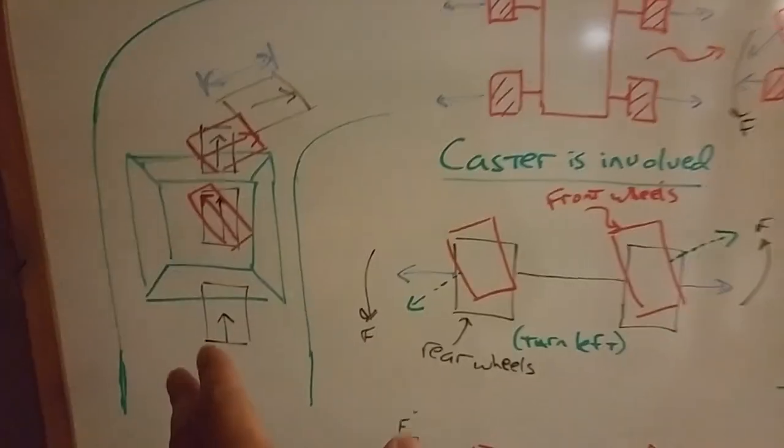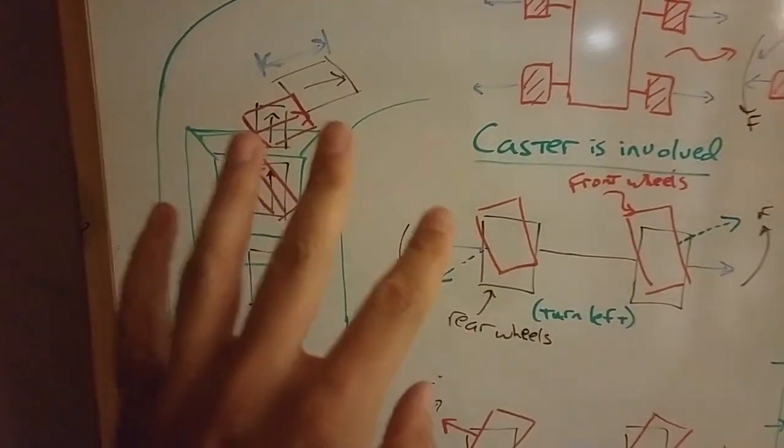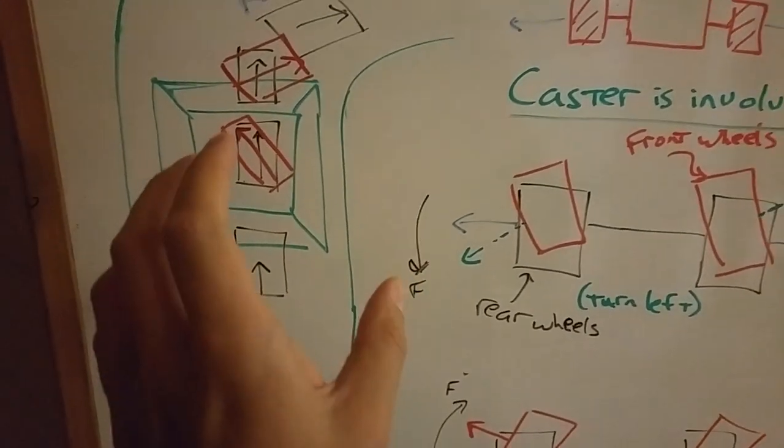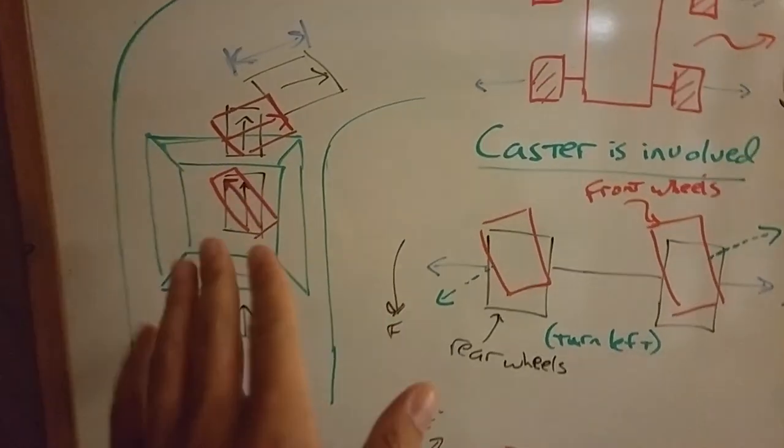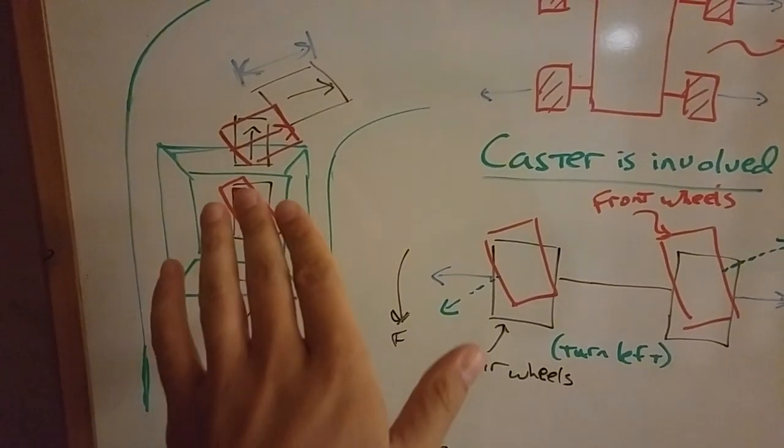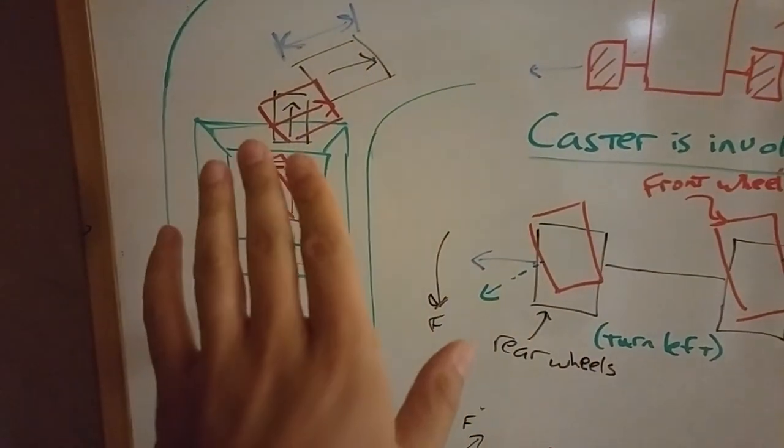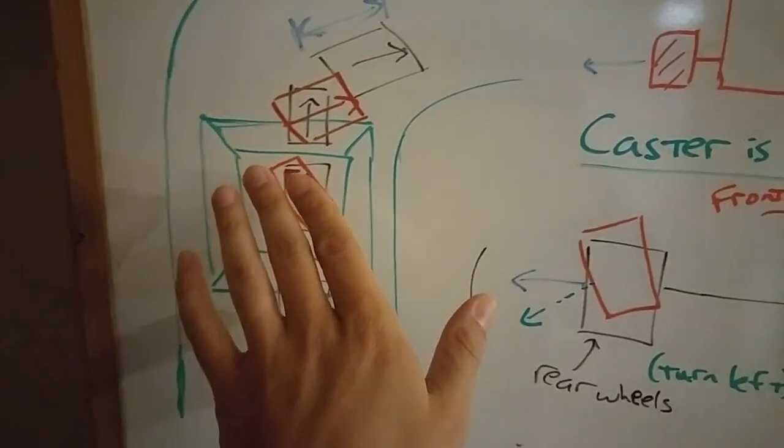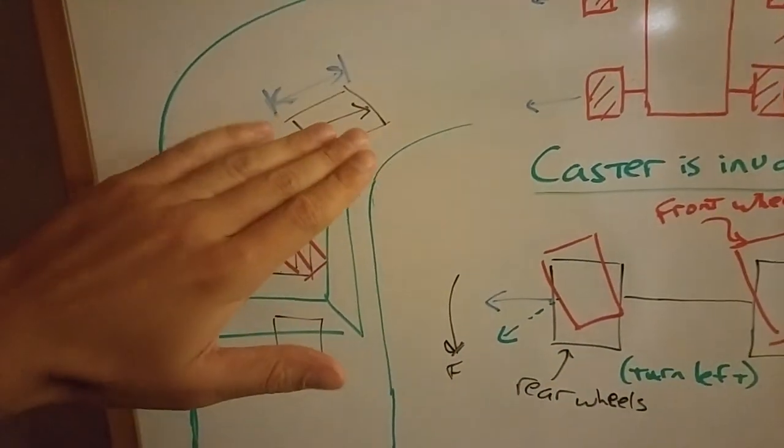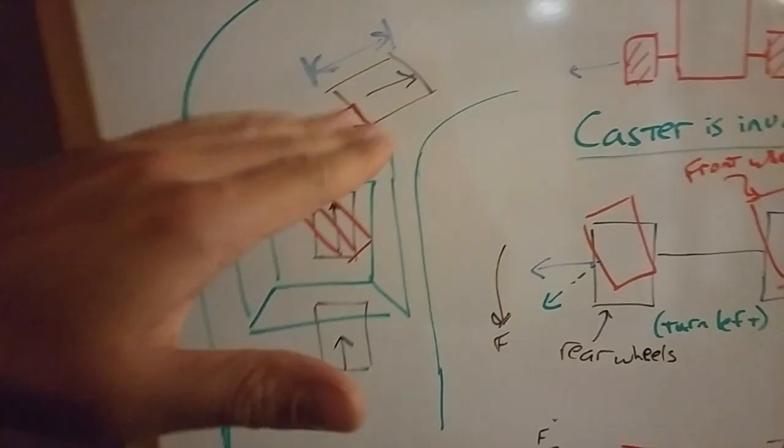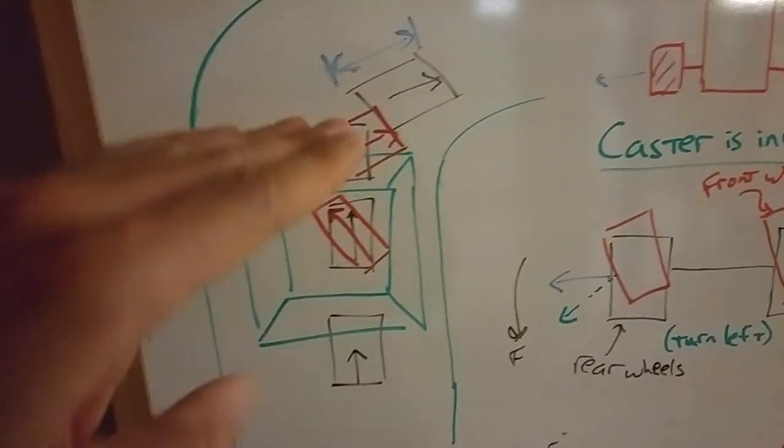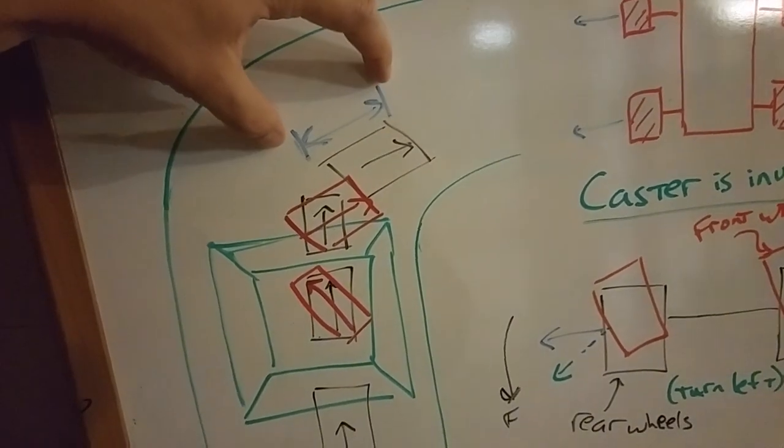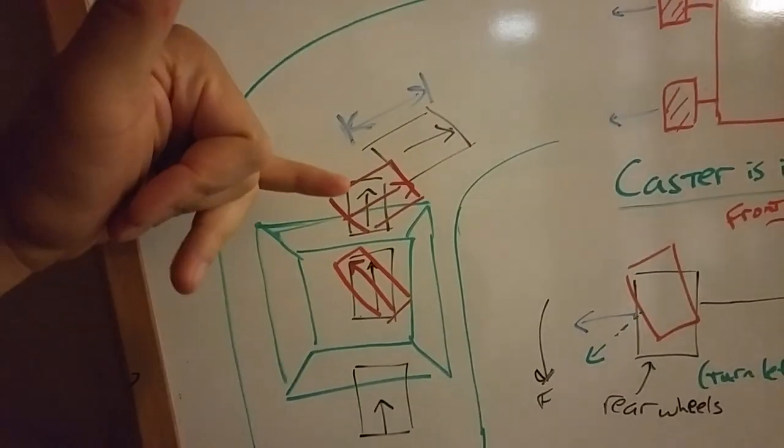When you whip the car, what you're essentially doing is steering the car in midair. And so what ends up happening, if you whip the car correctly, is that at first the car will point itself away from the turn, and then you make another correction and it points the car towards the turn so that as you're landing, the car is already pointing in the direction of the corner, and it saves you this much space, track space,